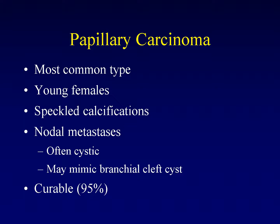Papillary thyroid carcinoma is the most common type of thyroid cancer. It tends to affect young females and is characterized by speckled calcifications. When it spreads, it tends to spread to surrounding lymph nodes, which are often cystic and may look just like a branchial cleft cyst. Since these patients will sometimes be teenagers, there is a fair amount of demographic overlap, which can be confusing. Thankfully, papillary thyroid carcinoma is curable — some 95% of patients are cured — though aggressive forms such as the tall cell variant are somewhat harder to treat.